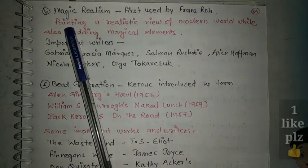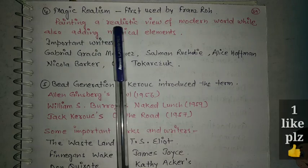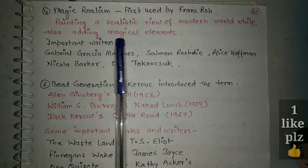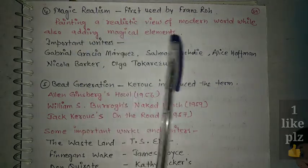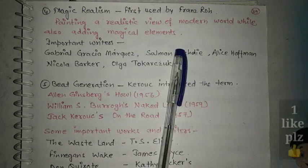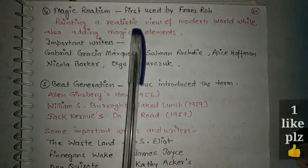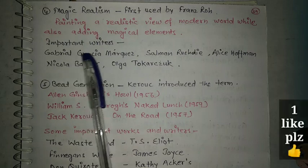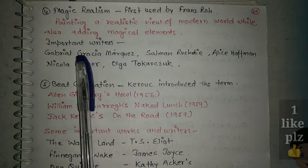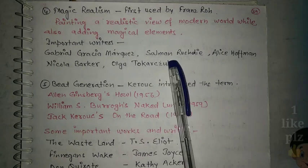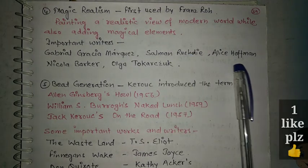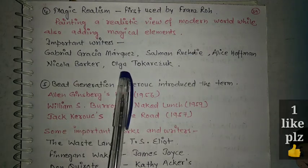The next idea related to postmodern literature is Magic Realism, first used by Franz Roh, presenting a realistic view of the modern world while also adding magical elements. Some important writers associated with Magic Realism are Gabriel García Márquez, Salman Rushdie, and Alice Hoffman.